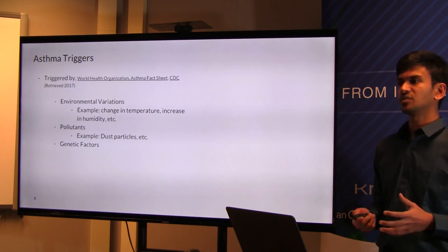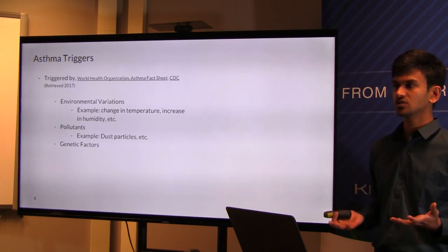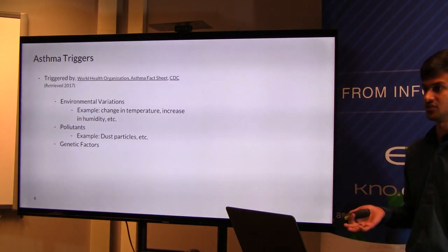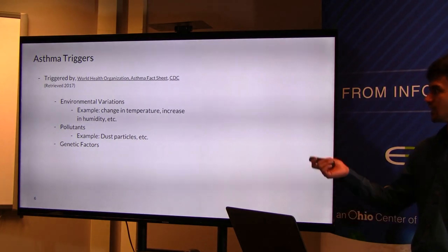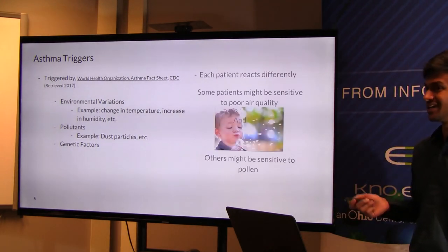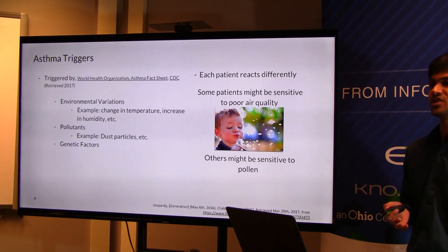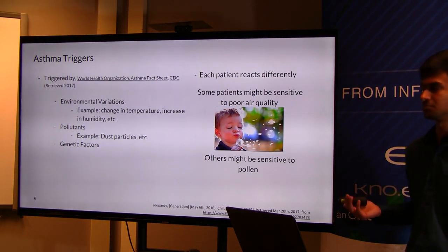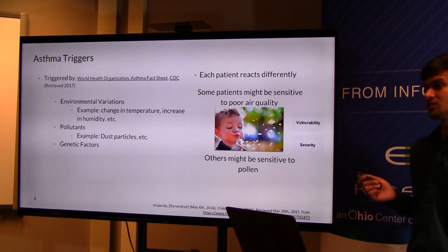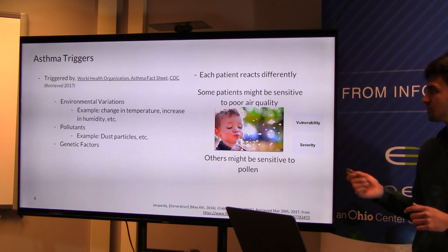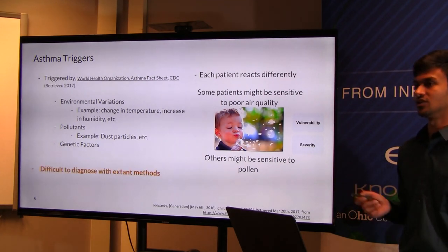Asthma triggers can be environmental variations such as change in temperature, increased humidity, and so on. Pollutants in the air such as dust particles can also impact asthmatic outcomes. Genetic reasons can also be one of the factors. Each patient reacts differently — some might be sensitive to poor air quality and some to pollen count. Vulnerability and severity levels also come into the picture, where even lower unhealthy groups can affect asthmatic outcomes.